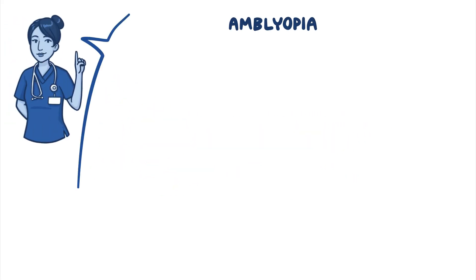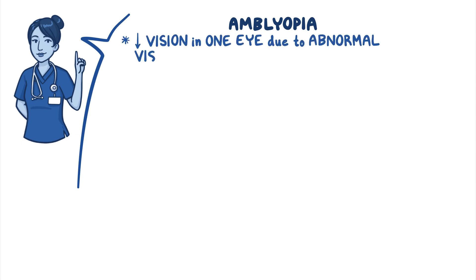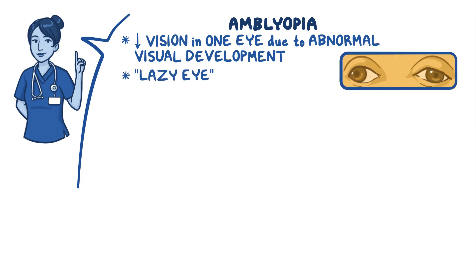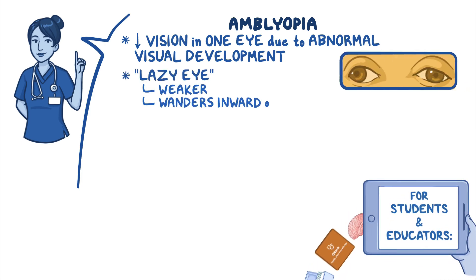Amblyopia is a condition in which there is reduced vision in one eye due to abnormal visual development. It is commonly referred to as lazy eye because the affected eye is weaker and often wanders inward or outward.